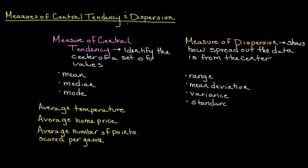Although measures of central tendency provide some clarity on a data set, they don't tell the whole story. By using a measure of dispersion, we get a sense for how spread out the data is from the center.